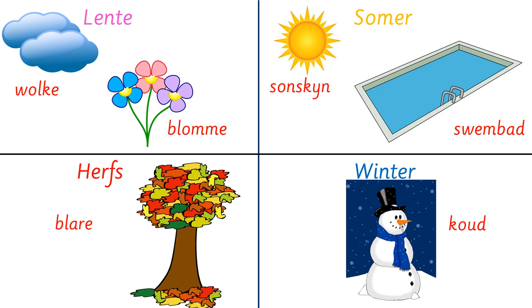So there, boys and girls, are ten new words for you to practice and learn for Afrikaans. Maybe stick this poster up somewhere so that you can practice saying these words whenever you look at it. Try to memorize them. Baie goed, baie dankie, uitstekend more. Tot siens!